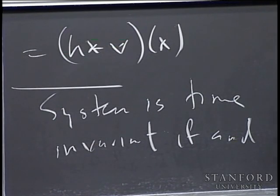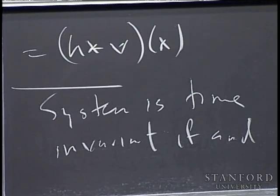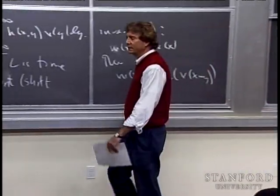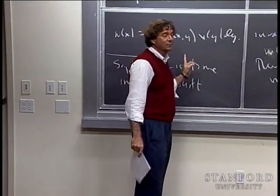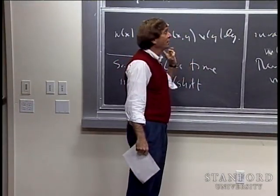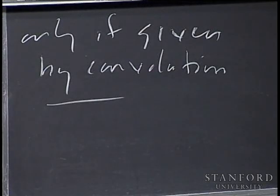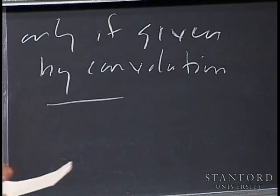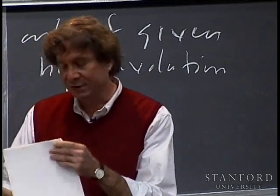That's where we finished up last time — a very satisfactory state of affairs for the structure of linear systems. Any linear system is given by integration against the impulse response. The system is time-invariant if and only if that integration reduces to a convolution. This is another indication of how fundamental convolution is in the whole theory. Any time anybody mentions convolution, bells should go off in your head suggesting that you take the Fourier transform.